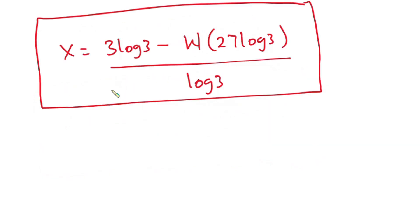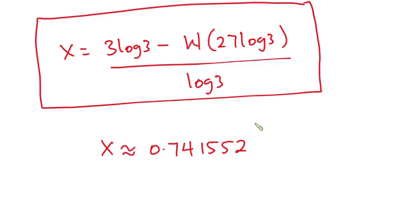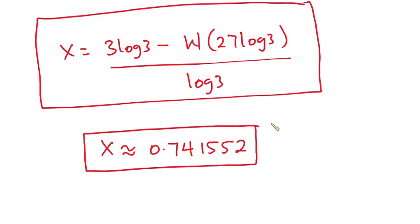If we type this into Wolfram Alpha, x is approximately equal to 0.741552. You can go ahead and type this into a calculator to verify it satisfies the equation. I hope you found this video useful — please give it a thumbs up and don't forget to subscribe. Thanks a lot for watching, see you in the next video.